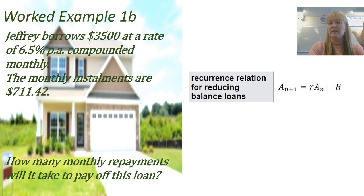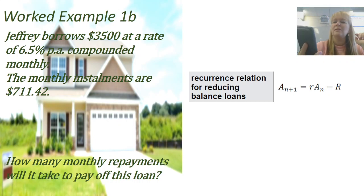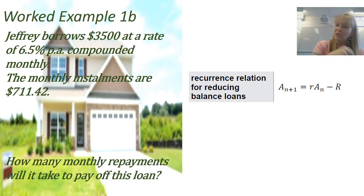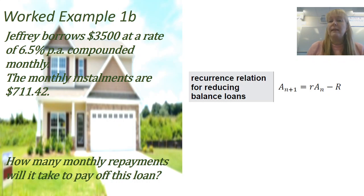Pressing equals again gives the second monthly payment — $2,111 is owing. Third payment: $1,411. Fourth payment: $707. Fifth press gives $0.01 — so after five monthly repayments, just one cent is owing. Rather than making a sixth repayment and paying interest on one cent, you would simply add that cent to the fifth repayment. So it takes five monthly repayments to pay off this loan. Pause the video and try that on your own calculator.